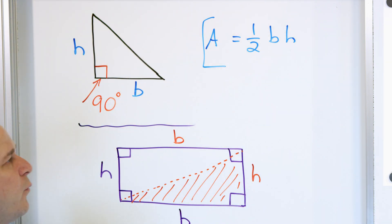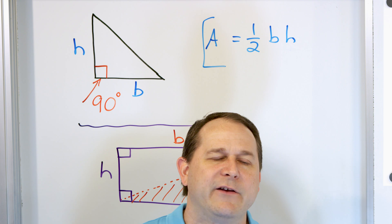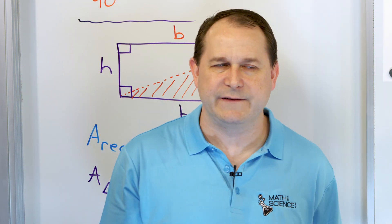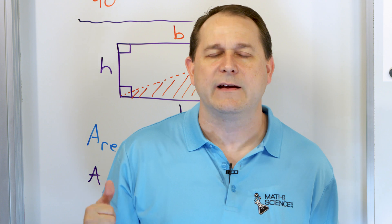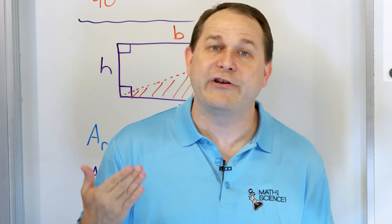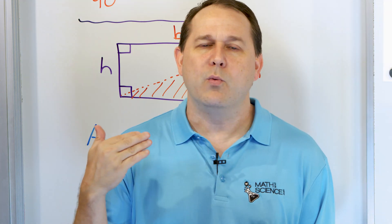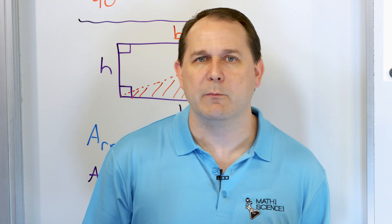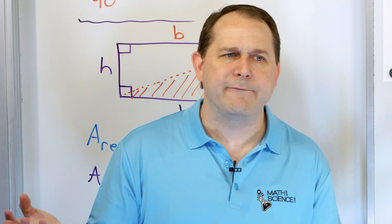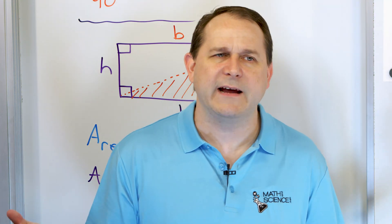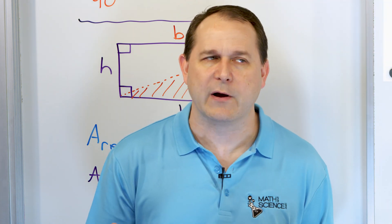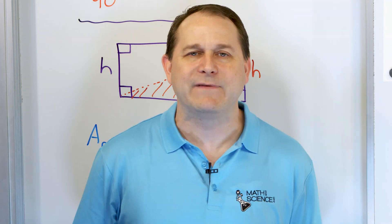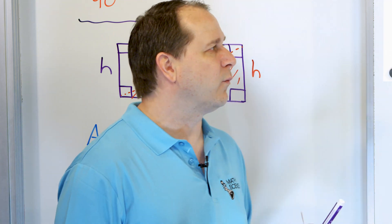That's why there's a one-half on the front of the formula. As we get higher in math, sometimes we can't prove things so easily — but I think everybody can see this. Now you understand where the one-half comes from: it's just the area of the rectangle sliced in half. That's the area of a right triangle.